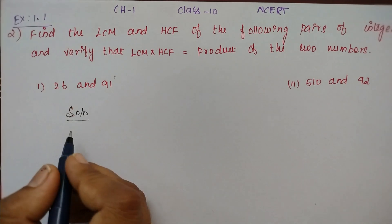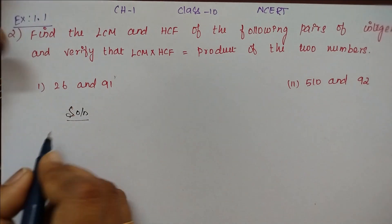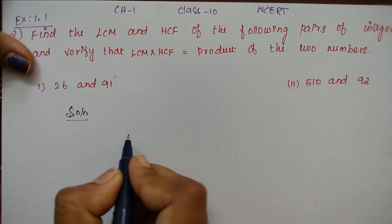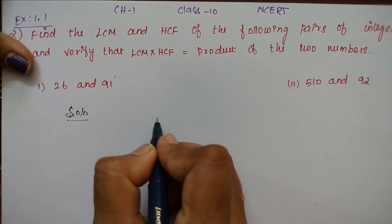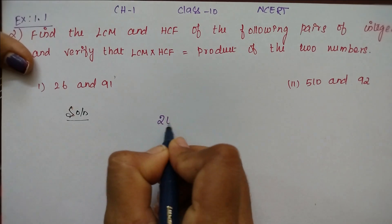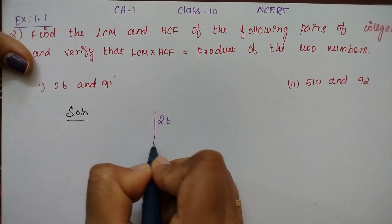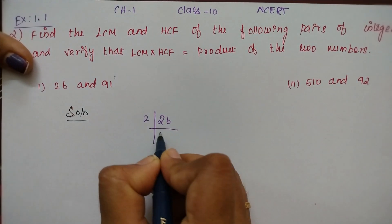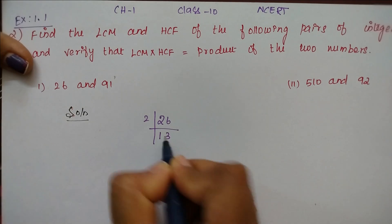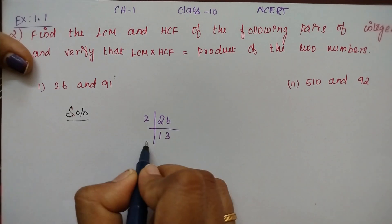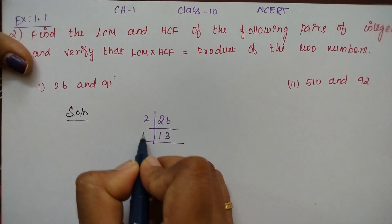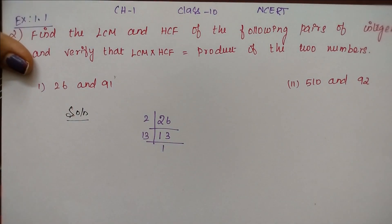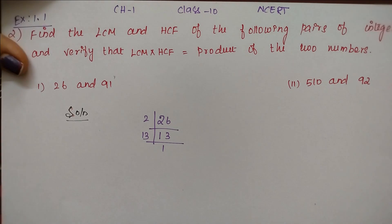First, we find the prime factors of 26. Dividing 26 by 2 gives 13, and 13 divided by 13 equals 1. So the prime factors of 26 are 2 and 13.